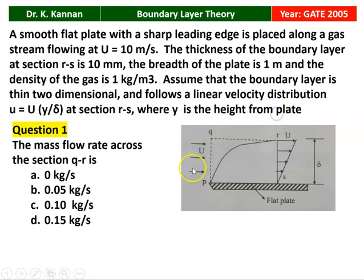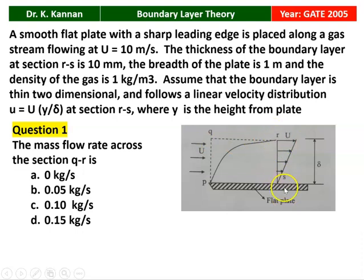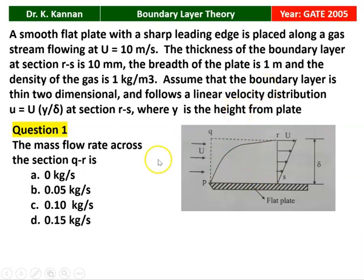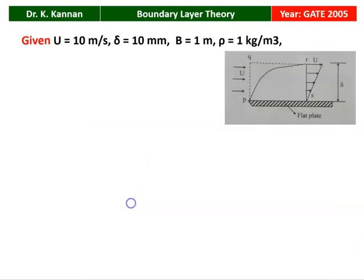Assume the boundary layer is thin, two-dimensional, and follows a linear velocity distribution: small u equals capital U × (y/delta) at section RS, where y is the height from the plate. There is flow of gas over the flat plate with a sharp edge. The entry is PQ, the length is QR, and the boundary layer thickness delta is measured at RS. The first question is the mass flow rate across QR — that is, what is the mass flow rate through the boundary layer into the potential flow region?